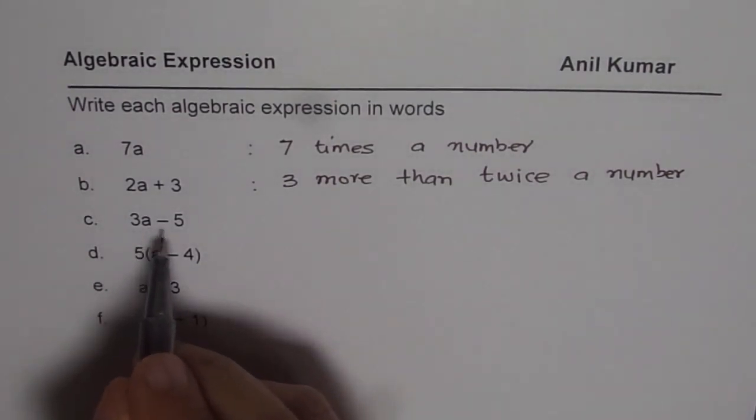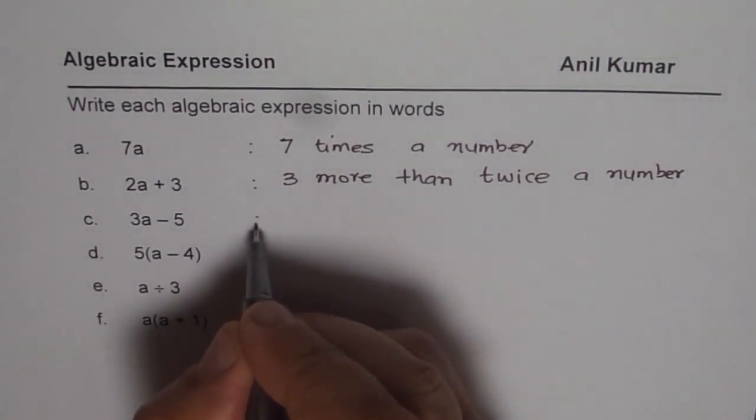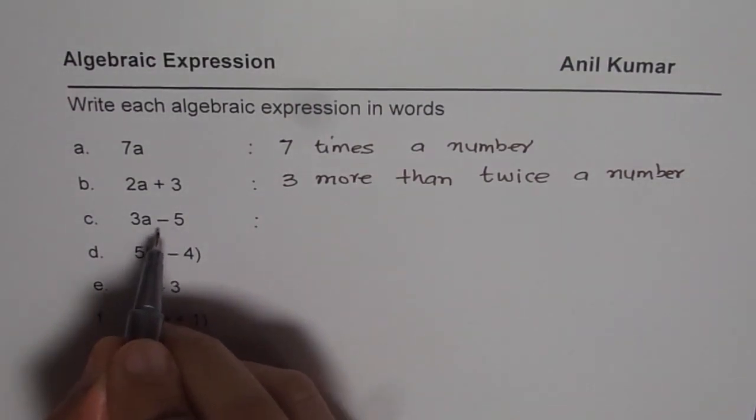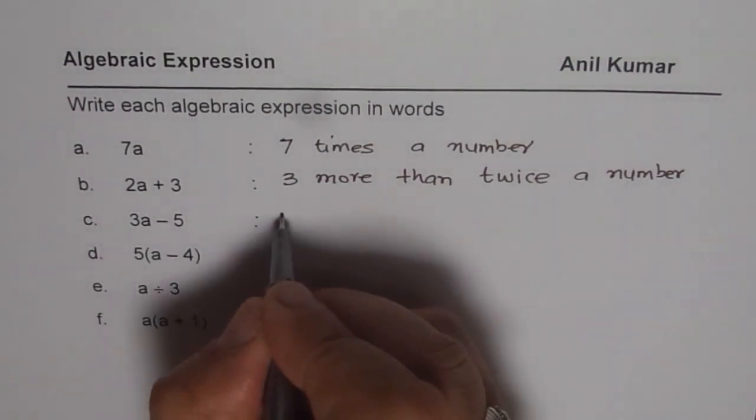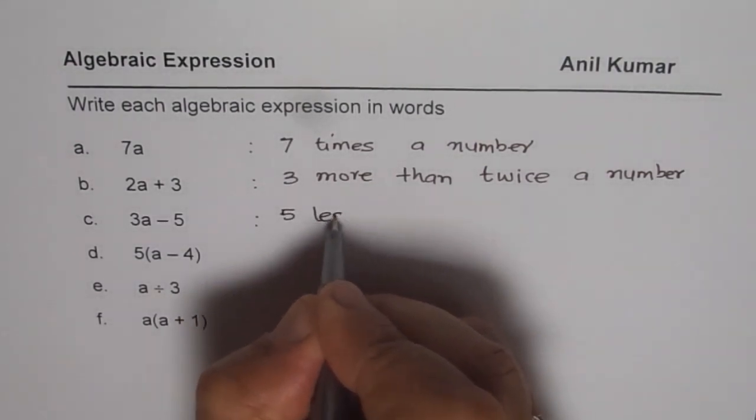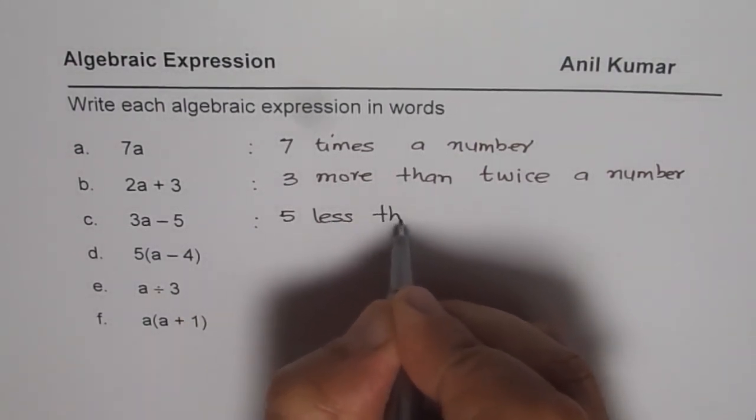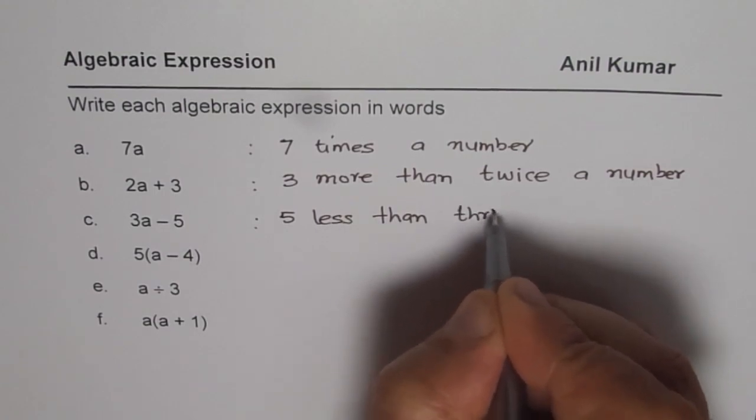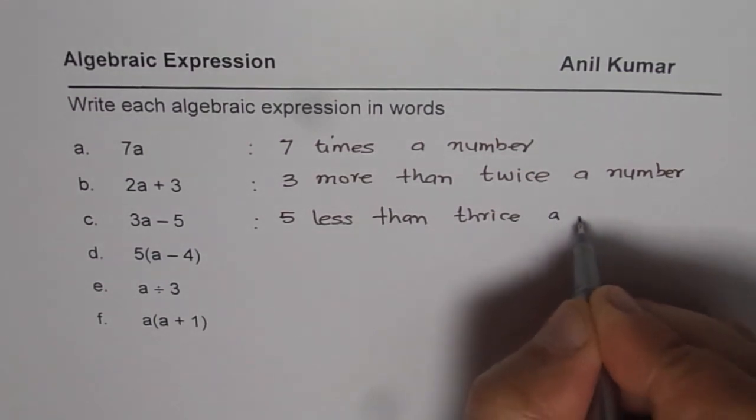Now we have 3a minus 5. What should that be? It is 5 less than thrice a number.